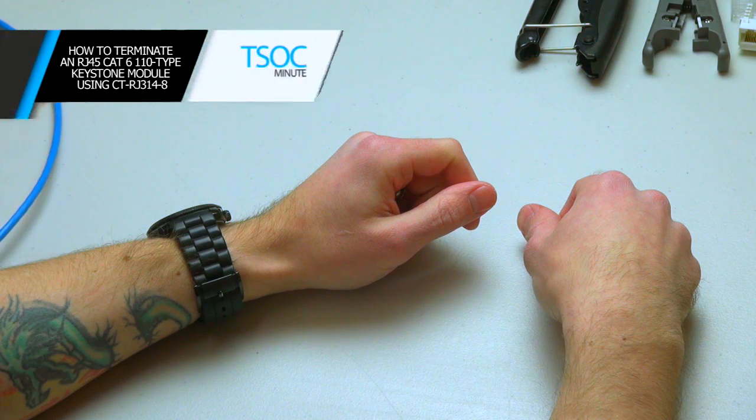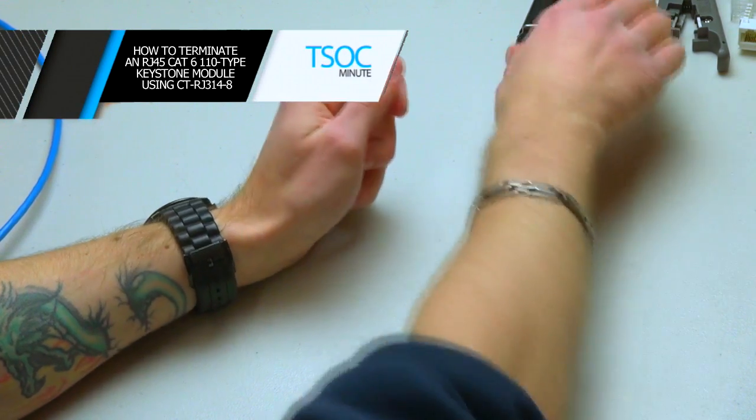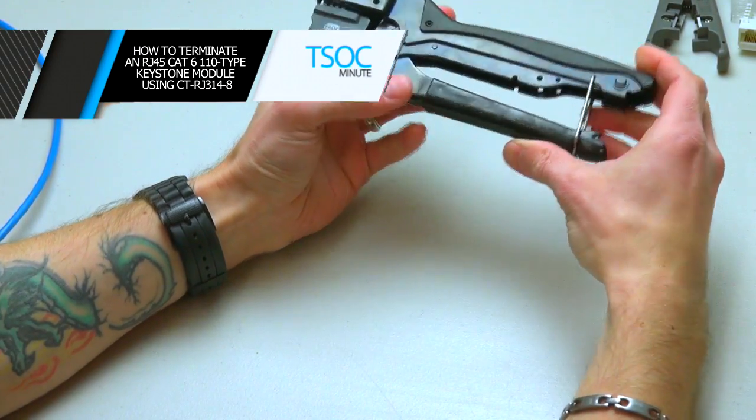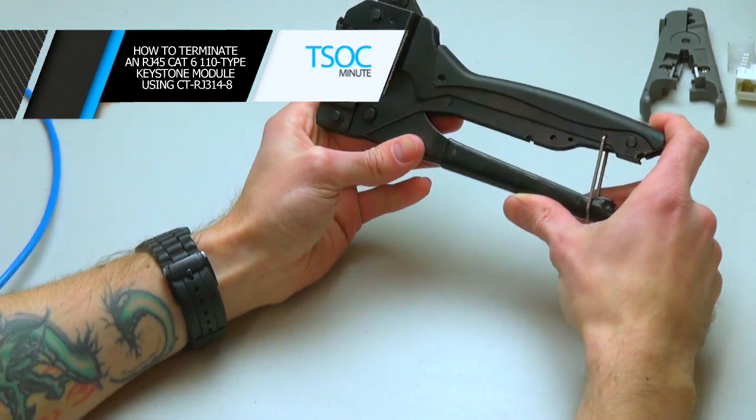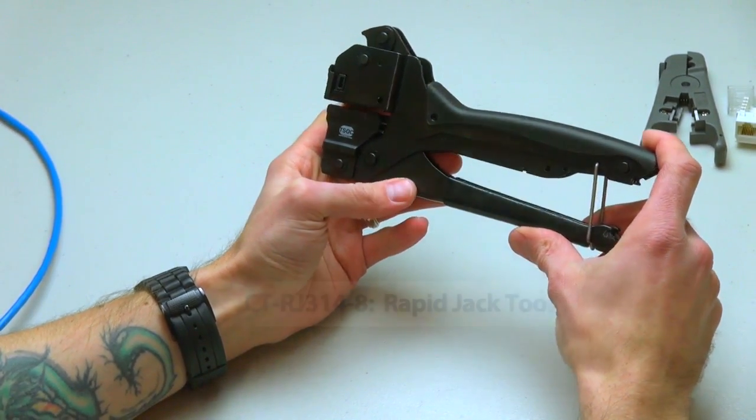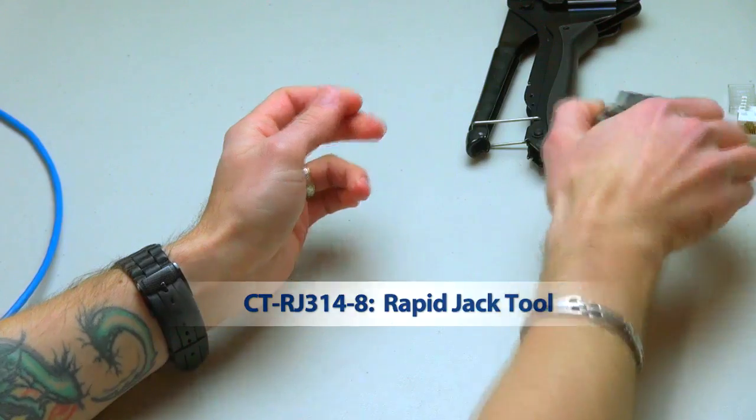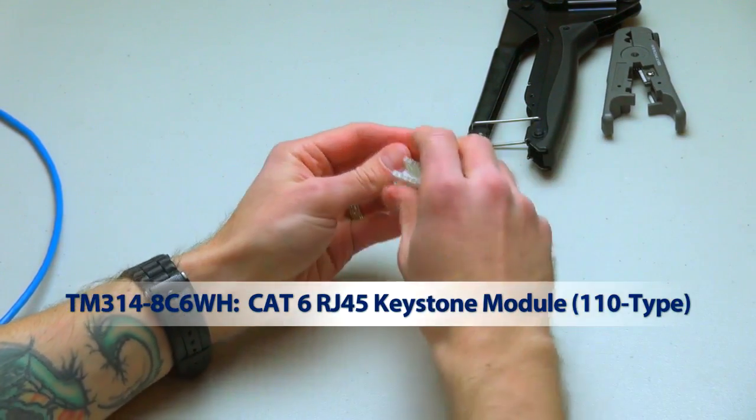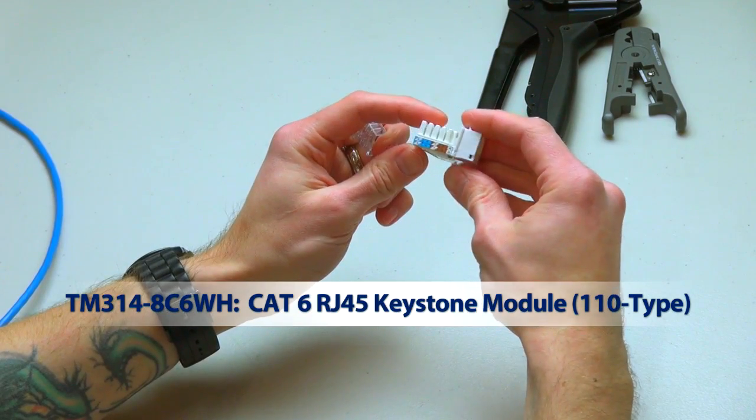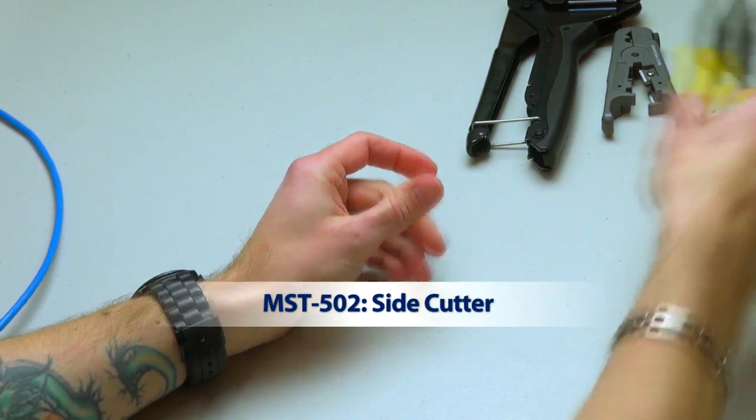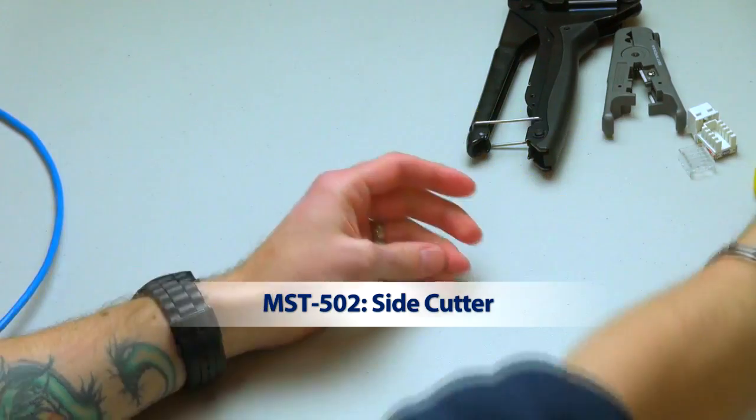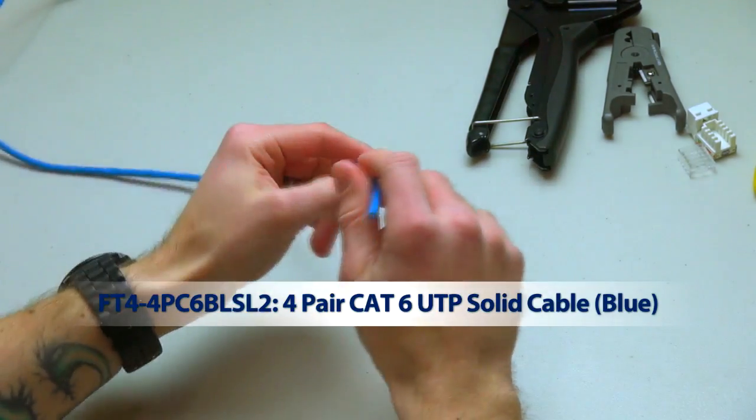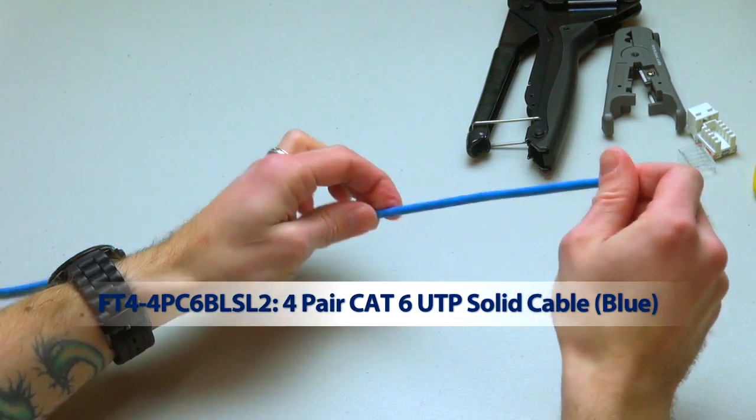How to terminate an RJ45 Cat6 110 type Keystone module using CT-RJ314-8. Materials required: rapid jack tool, cable prep tool, Cat6 RJ45 Keystone module, side cutters, needlenose pliers, and 4-pair Cat6 UTP solid cable.